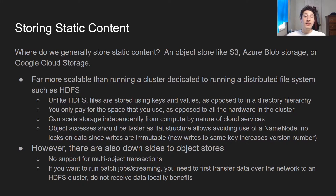First of all, unlike HDFS, object stores have a flat structure, which means you're just using keys and values for files as opposed to putting them in a whole directory hierarchy. This means you can use something like a consistent hashing method to find or write those files, so you don't need a centralized name node like Hadoop tends to use — which speeds up reads and writes. Additionally, there are weaker guarantees on object stores: you can't do atomic renames of files, so there are no locks on files. If a new version of a file is written it just gets a higher version number, meaning you don't have to worry about reading a half-updated file.